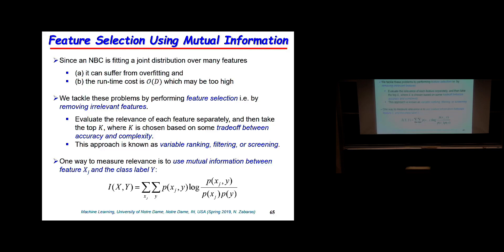One approach we discussed is figuring out whether you actually need all features for classification — identifying which features are not needed and eliminating them. A good way to do this is using mutual information between a feature x_j and the class labels y, which tells you how much knowing x_j reduces your uncertainty about y.